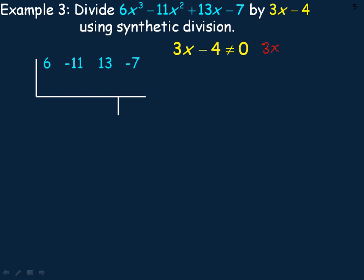If we add 4 to both sides, we would get 3x is not allowed to equal 4, and then we divide out the 3. So the restriction is x is not allowed to equal 4/3.